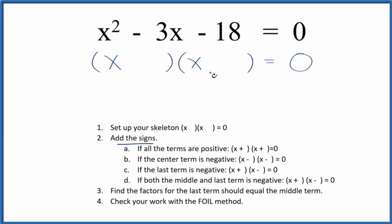Next we can add the signs to our skeleton equation. So we have a negative here and here. If both the middle and the last term are negative, I'm going to put a positive and negative in our skeleton like this.